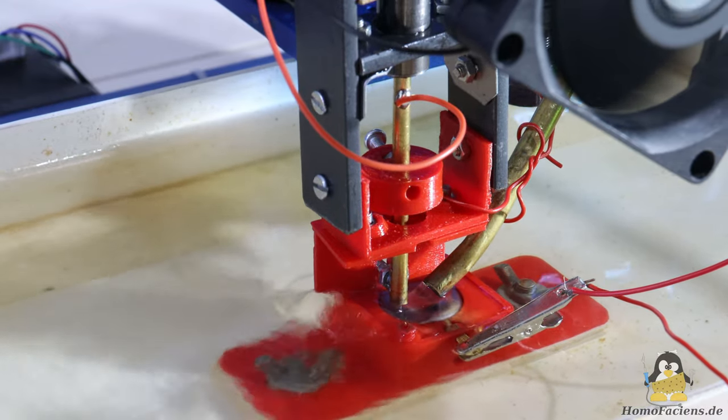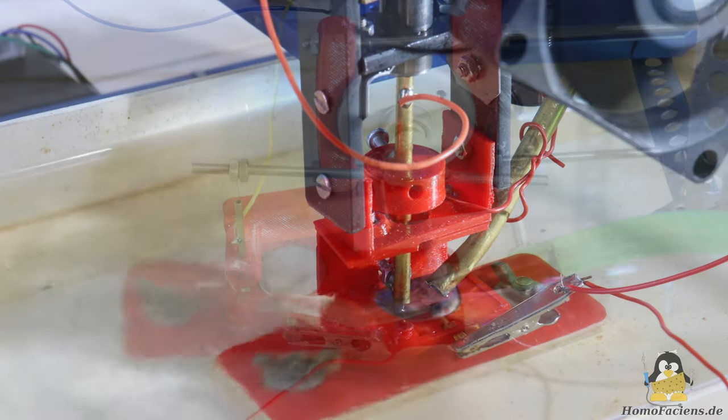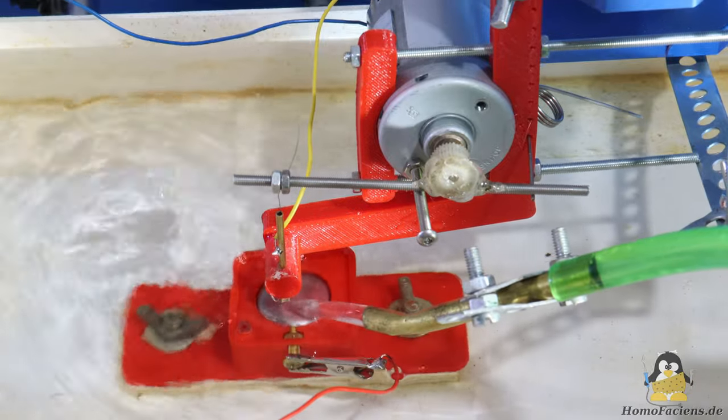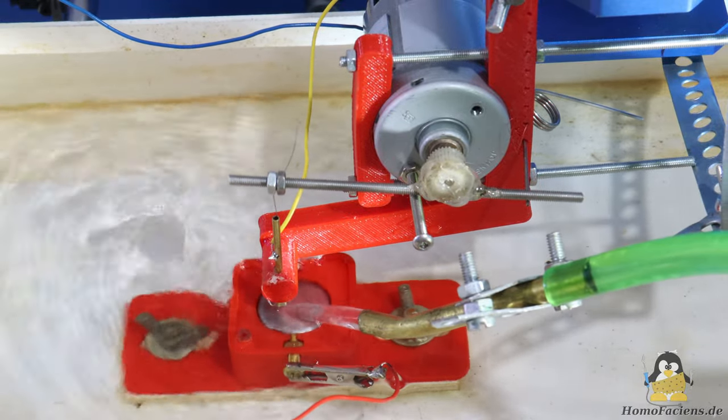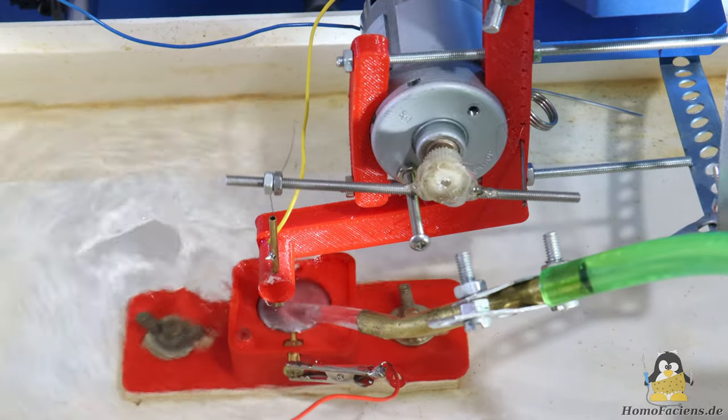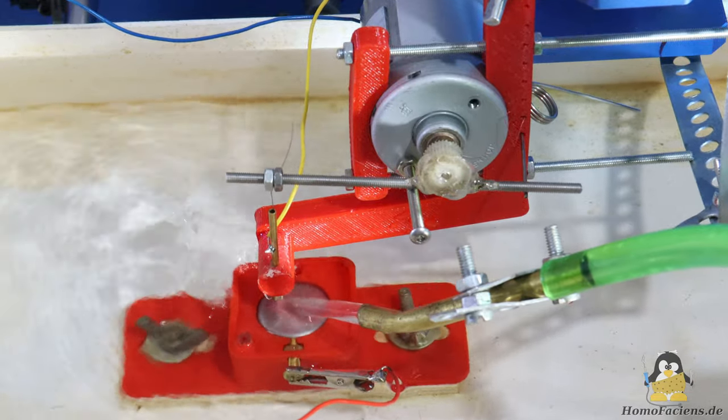Both the lifting magnets as well as the DC motors simply need to be connected to a voltage source and thus transform any CNC or 3D printer into a machine that can be used to engrave any metal.